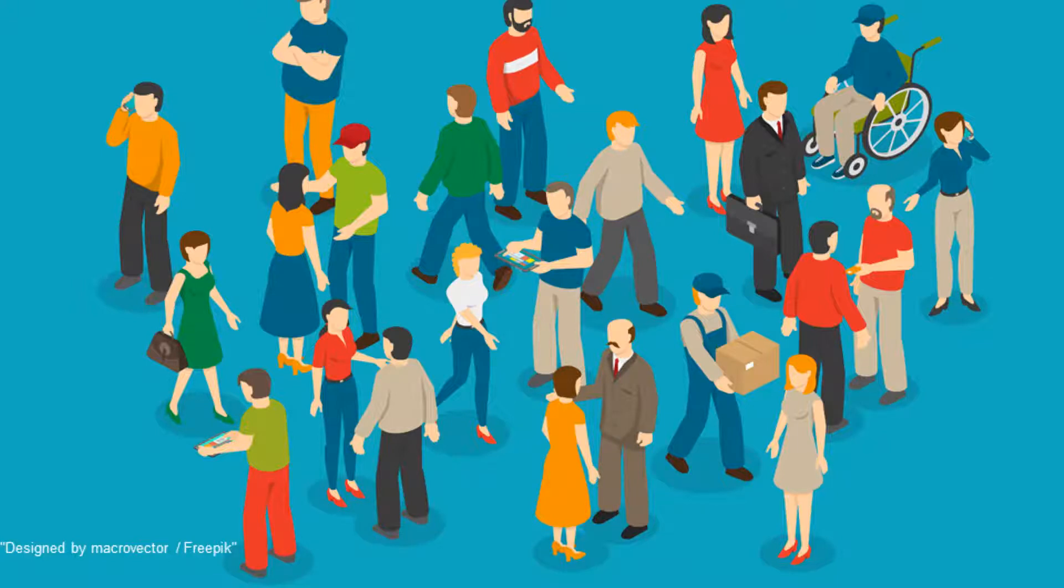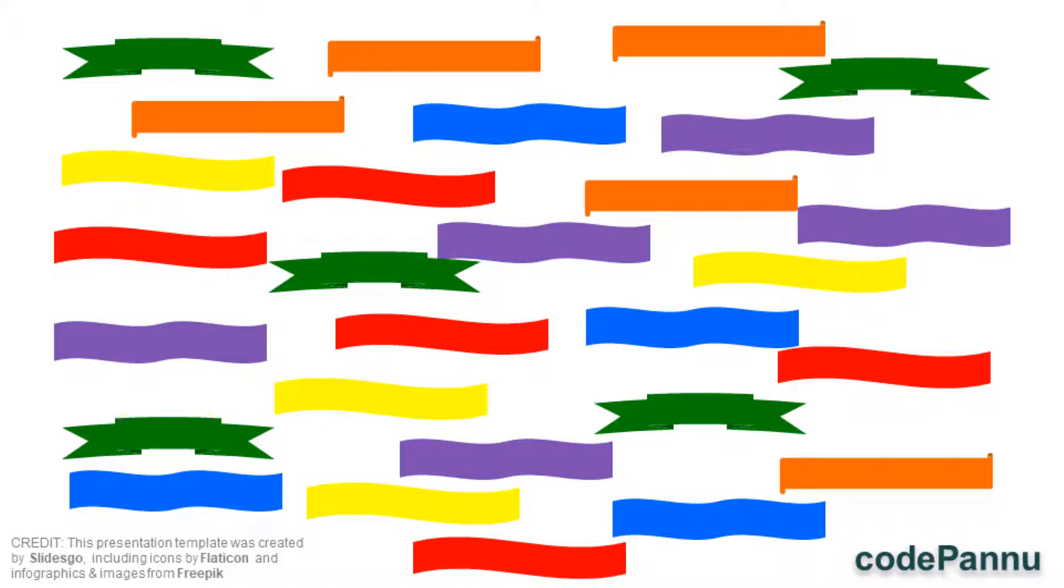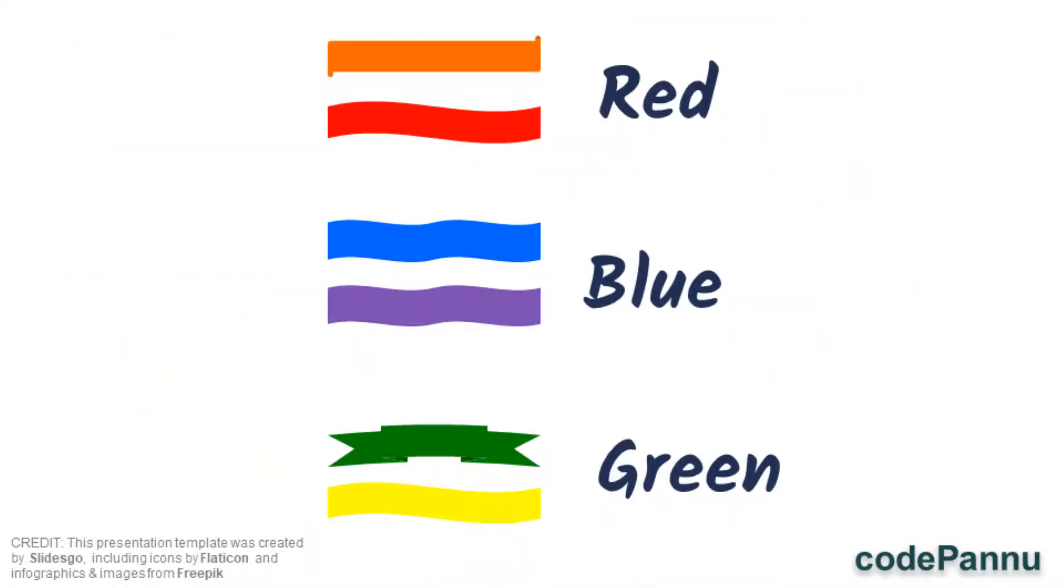Let's say there's a room filled with people and we are going to divide those people into three teams. How are we going to do that? We have a box which has ribbons in six colors. Each person will pick a ribbon and depending on the color, we will put them in a team. If a person picks orange or red, then they are in the red team. If somebody picks blue or violet, then they are in the blue team.